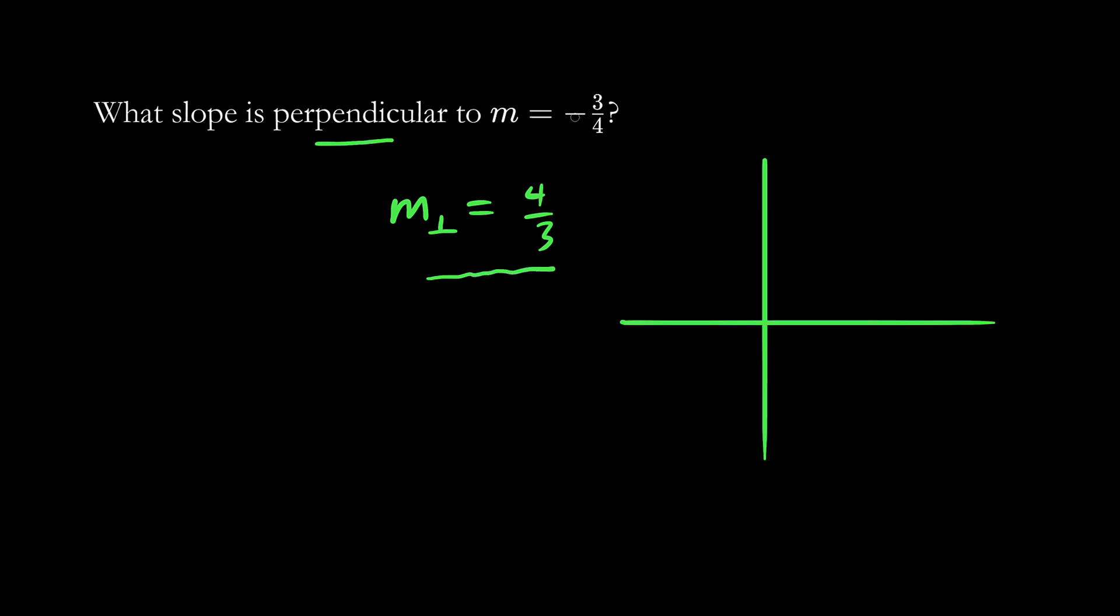The rise over run is negative 3 over 4, which means down 3—1, 2, 3—the run would be 4: 1, 2, 3, 4. So we'll put a dot here and here. We'll connect these dots. So this is our first slope, m.